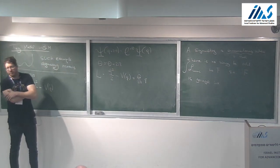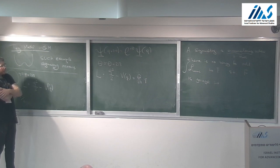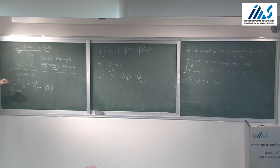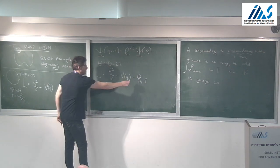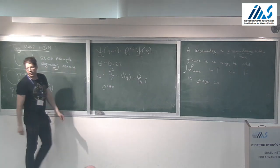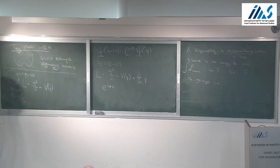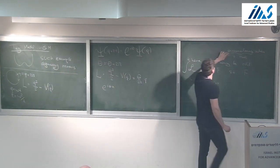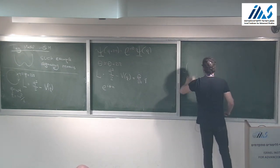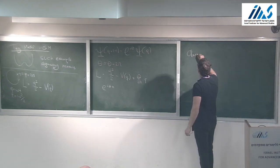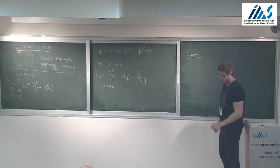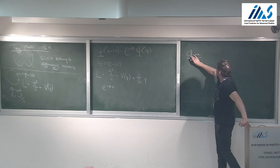The classical Lagrangian is Q̇²/2 minus the potential on the circle. Classically, if the potential is zero, you have particles moving around with constant angular frequency and energy ω²/2. Quantum mechanically, the theory has a new parameter that does not exist classically: the wave function does not have to be periodic, it can be periodic up to a phase.